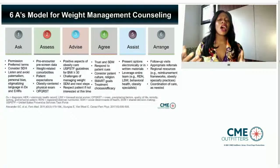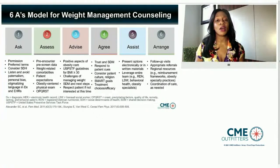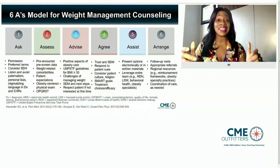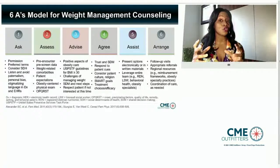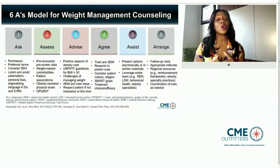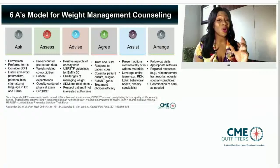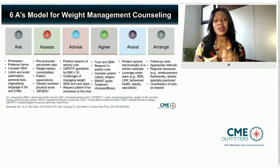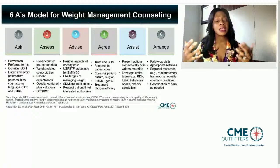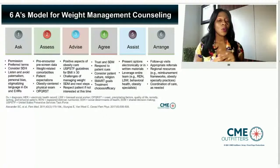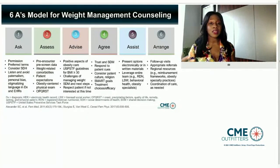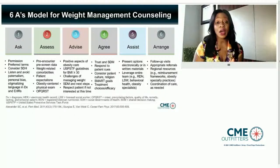When we look at how we engage in weight management counseling, I like to look at the six A's. First, we want to ask — ask for permission to begin to engage with patients about a discussion about their weight. We want to use preferred terms: we say 'with obesity,' not 'obese.' That labeling is stigmatizing. We don't call them fat, and we don't use 'morbid obesity.' This language has been changed at the AMA level since 2017. We want to listen and avoid paternalism.